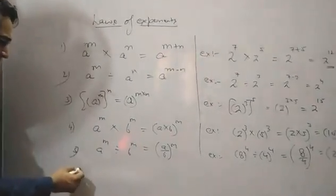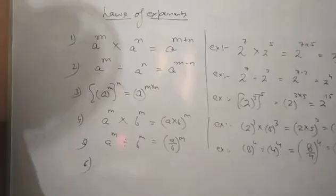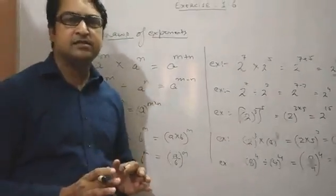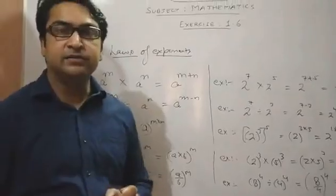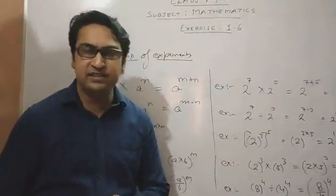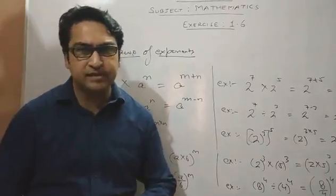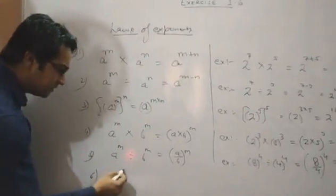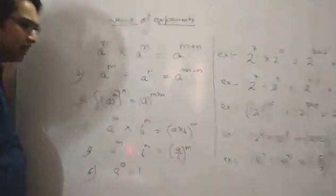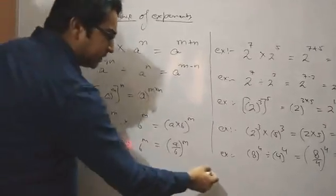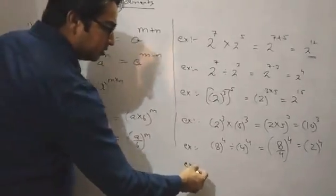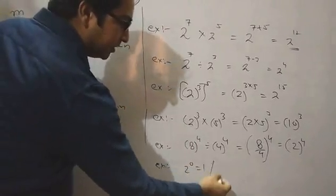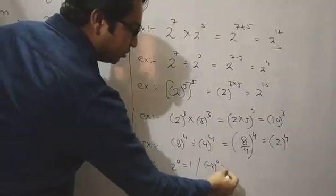Now the next law, number 6 is: when there is a power 0 of any base, then the answer is always equal to 1, whether the base is negative or positive. Like, A raised to the power 0 is always 1. For example, 2 raised to the power 0 equals 1, and minus 2 raised to the power 0 is also 1.